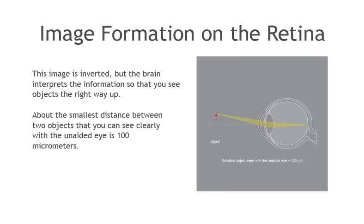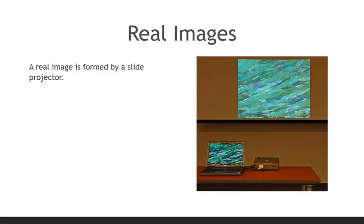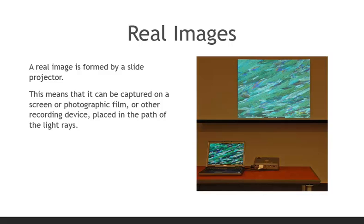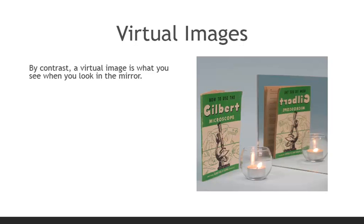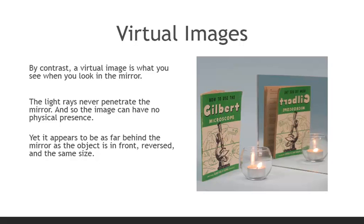Before we discuss how an optical lens can help you to see small objects, let's discuss the two possible kinds of images. A real image is formed by a slide projector — it can be captured on a screen, photographic film, or other recording device placed in the path of the light rays. By contrast, a virtual image is what you see when you look in the mirror. The light rays never penetrate the mirror, and so the image can have no physical presence, yet it appears to be as far behind the mirror as the object is in front, reversed, and the same size.